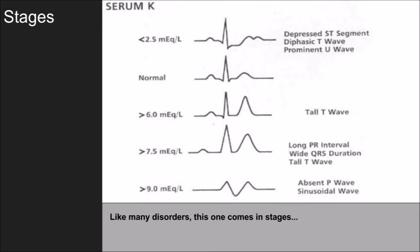As we get above 7.5 milliequivalents, we begin to see some notable changes. First, the PR interval is going to widen, and the QRS duration is also going to widen. You still maintain that tall peaked T wave, but as the cells become more and more negative, they become harder and harder to depolarize with the normal amounts of remaining electrolytes left to combat the potassium.